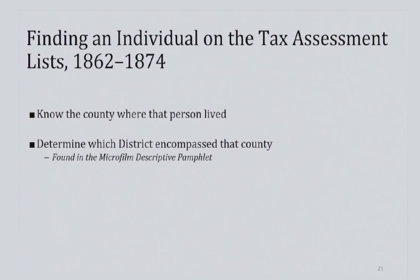Finding your ancestors on these lists can be somewhat tricky because you have to know where your ancestor lived down to the county. For most 19th century individuals, you would know that information from the census records. Once you know that, you have to determine which districts encompass that county. This information can be found in the descriptive pamphlets, sometimes called DPs, produced for the Microfilm Publications for Tax Assessment Lists 1862–1866.